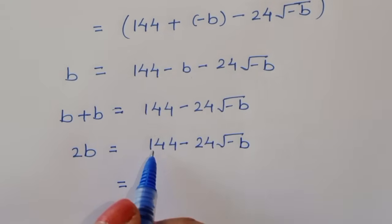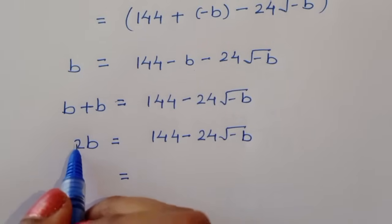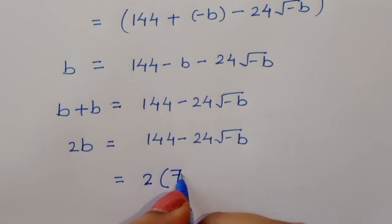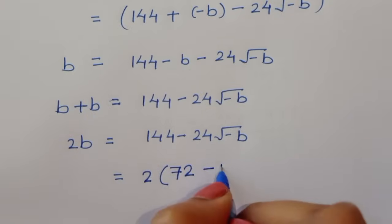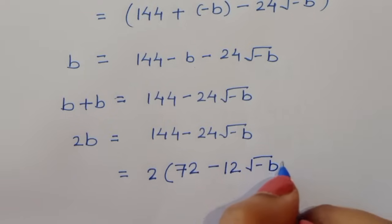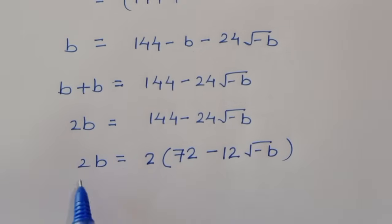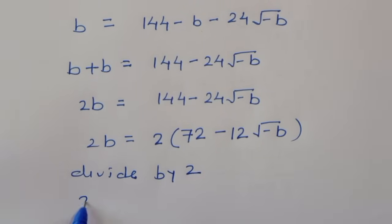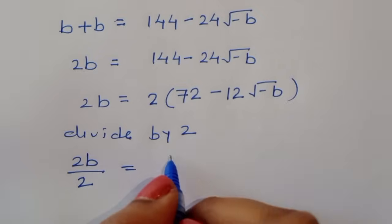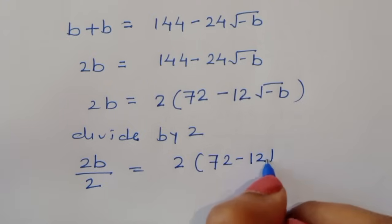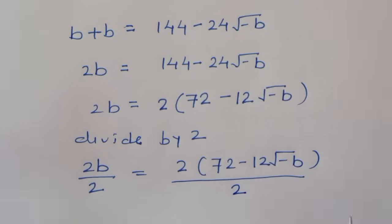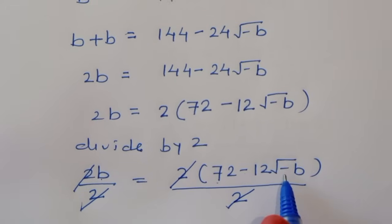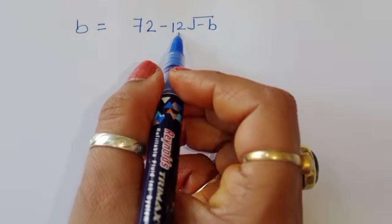Now, since we have 144 and 24, we can take out a common factor of 2 from the right-hand side: 2b = 2 times (72 minus 12 square root of minus b). Dividing both sides by 2, we get b is equal to 72 minus 12 square root of minus b.